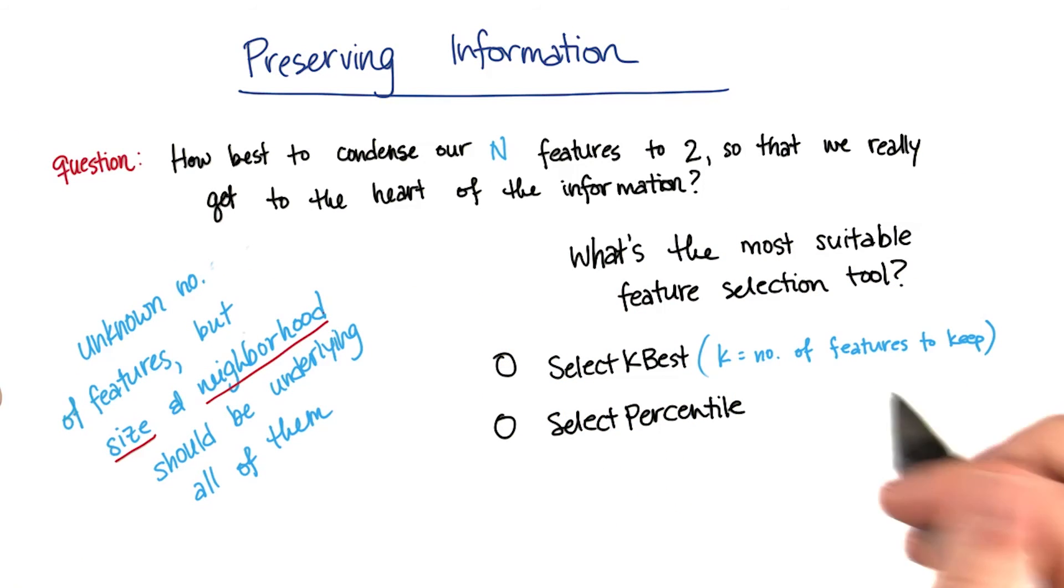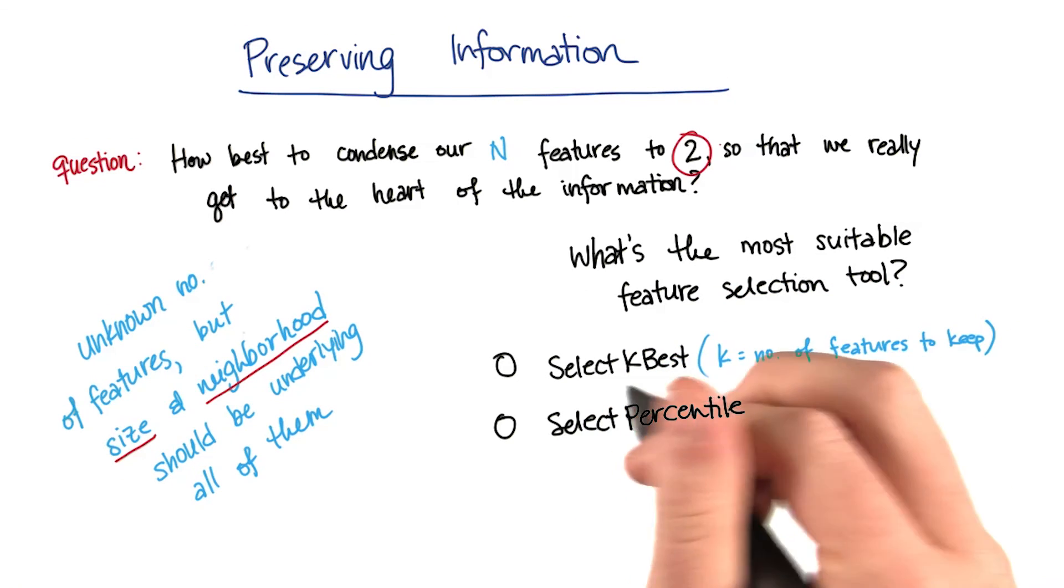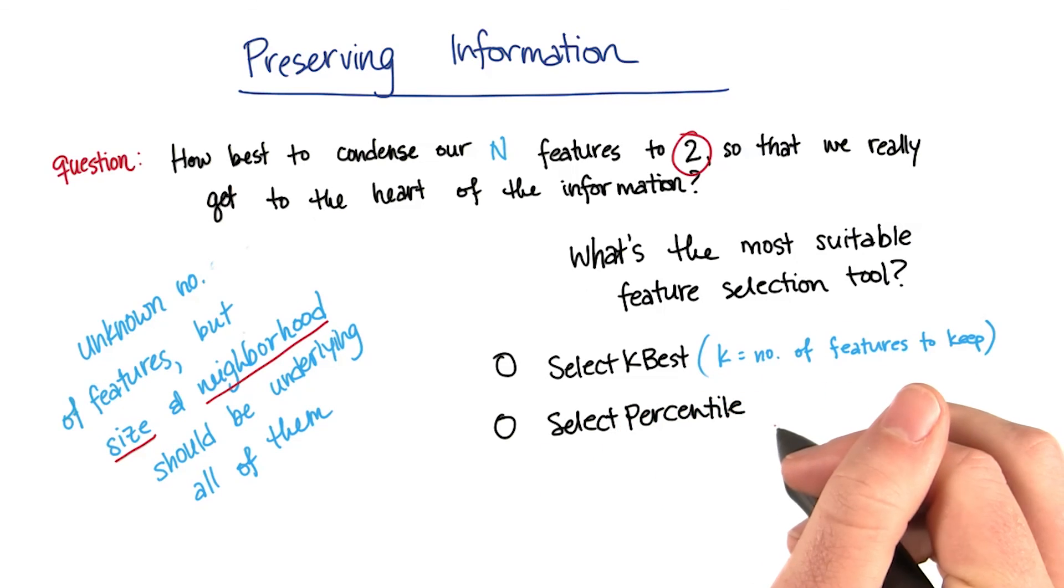So the question for you is, if you want to have two output features, what's the most suitable feature selection tool to use in this scenario? Do you want to use select kbest or select percentile?